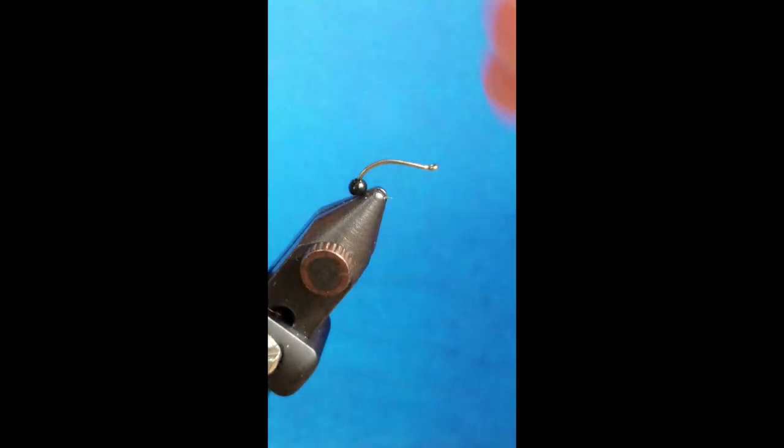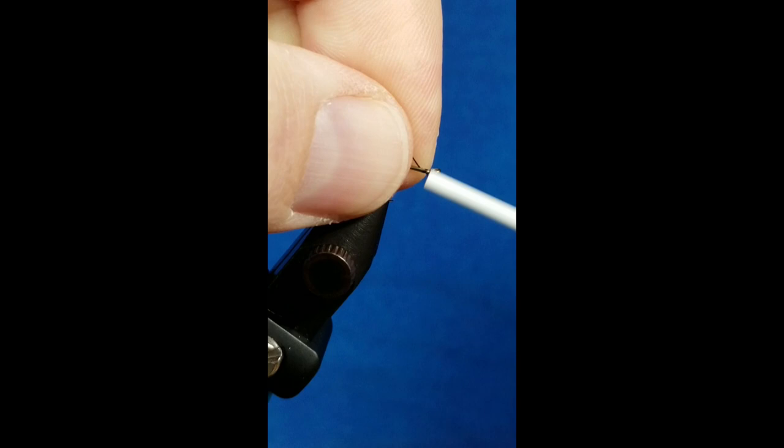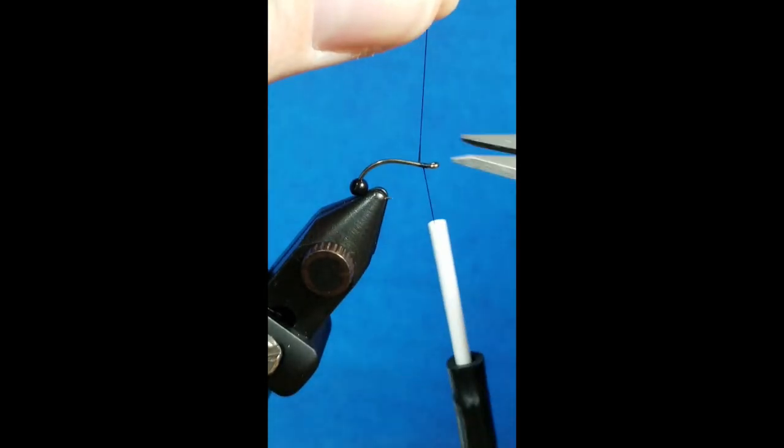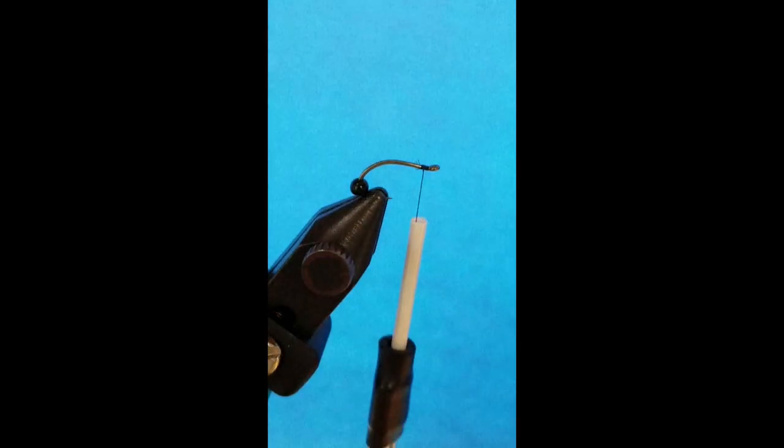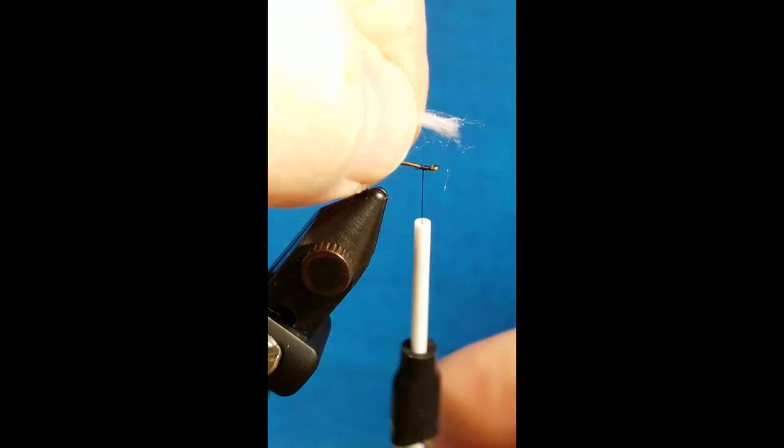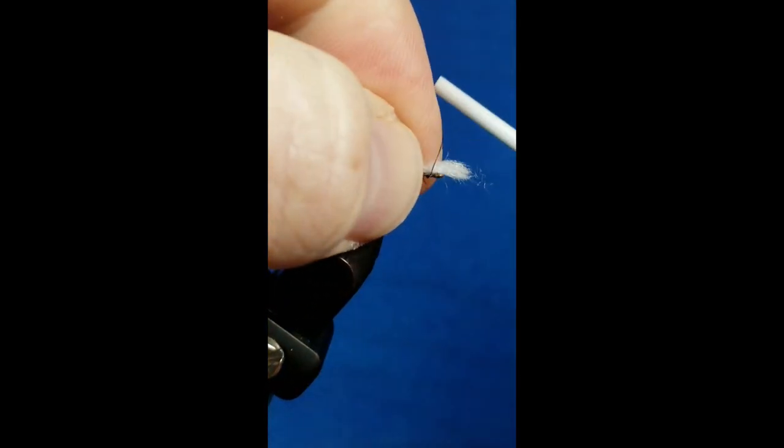I'm using Veevus 14/0 thread in black for this. I'm going to come in, catch that thread behind the eye of the hook. For the gills on this pattern, I'm going to use a single strand of LaFontaine sparkle yarn.